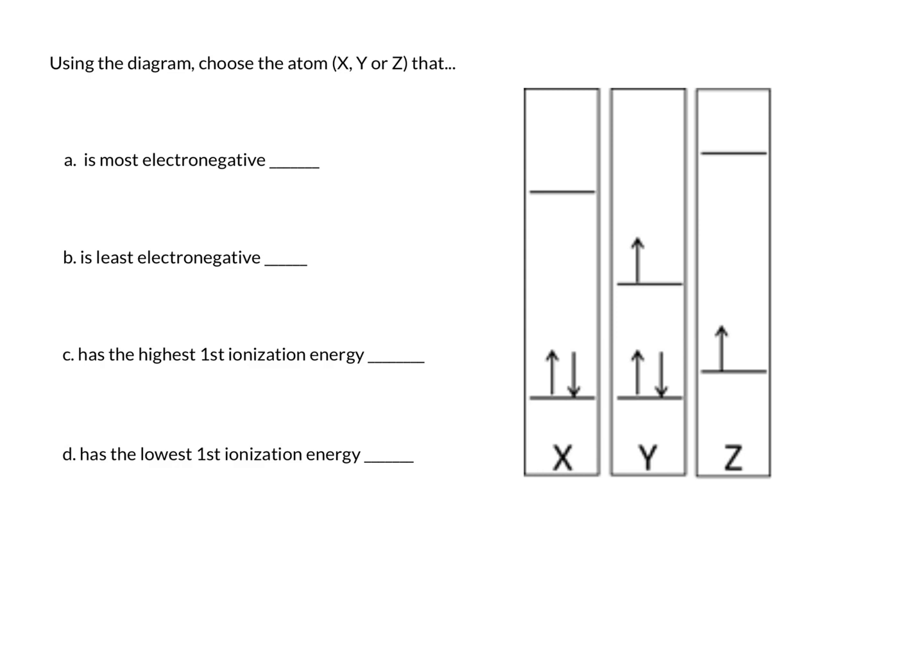This is a question about diagrams and electronegativity and ionization energy. One thing to remember about these diagrams is that the nucleus is below, and there may be empty orbitals above.